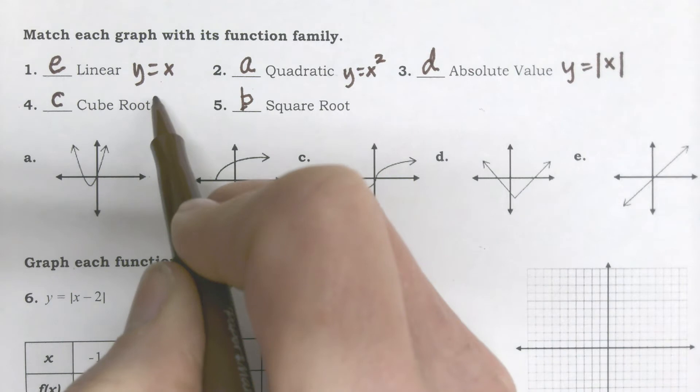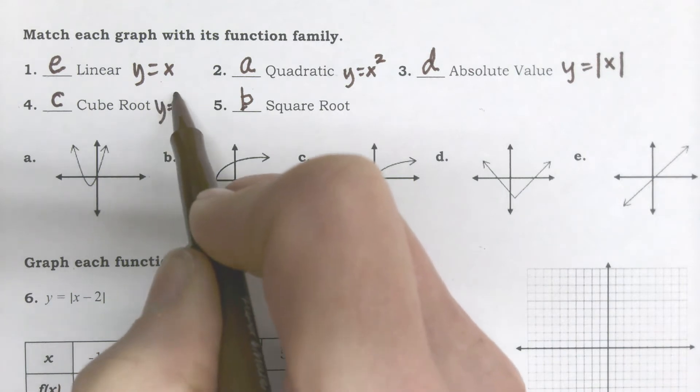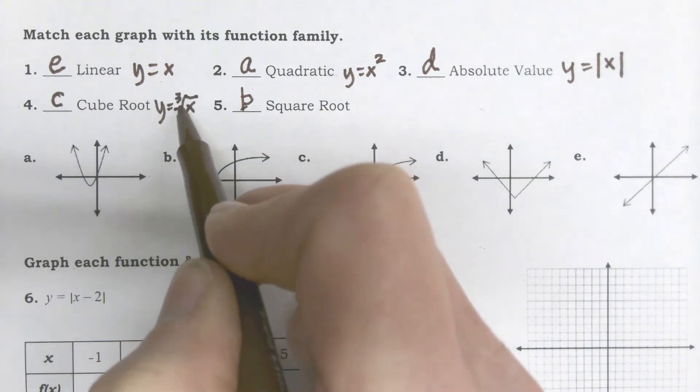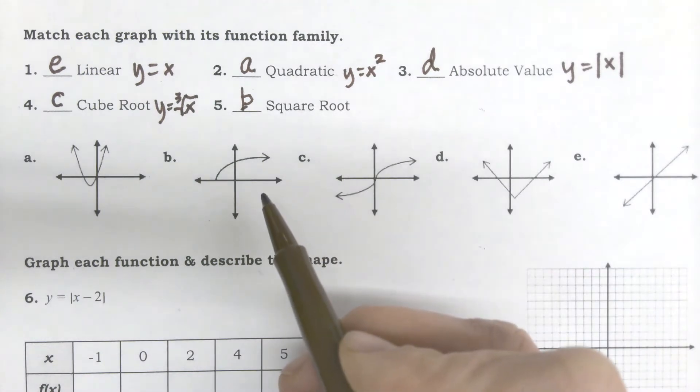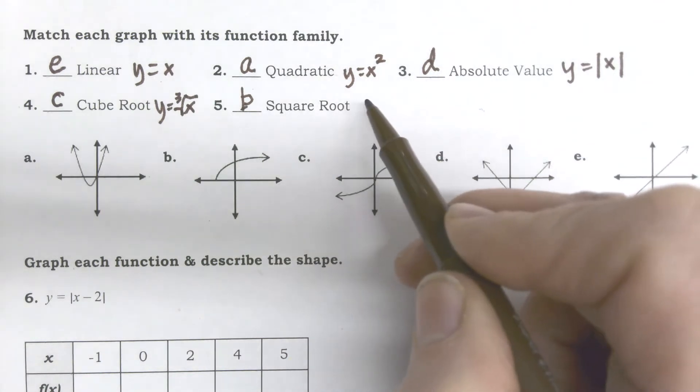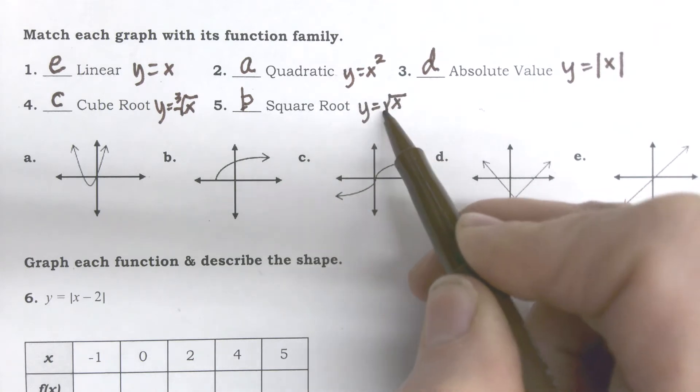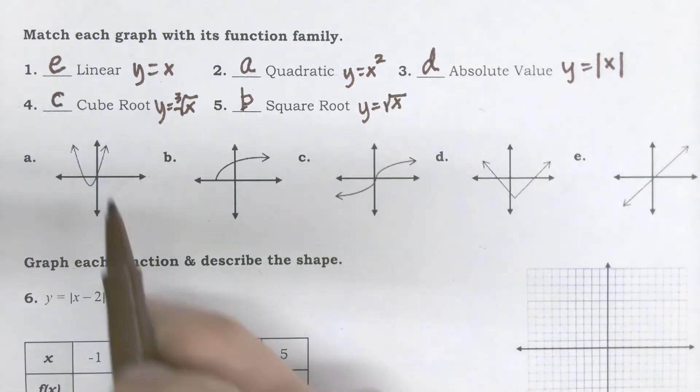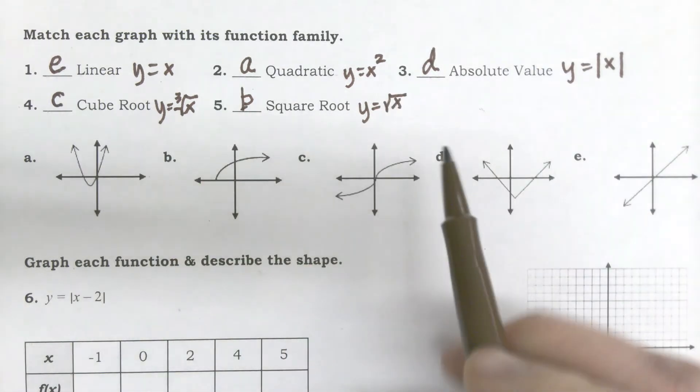Cube root is Y equals the little three on the outside. And then, the square root is Y equals just that radical without the little number in the corner. So, those are the function families that we look at.